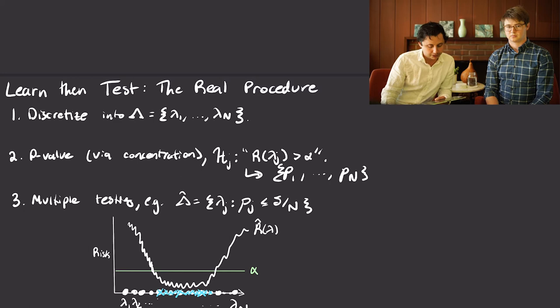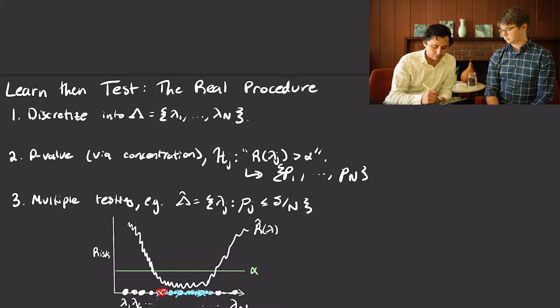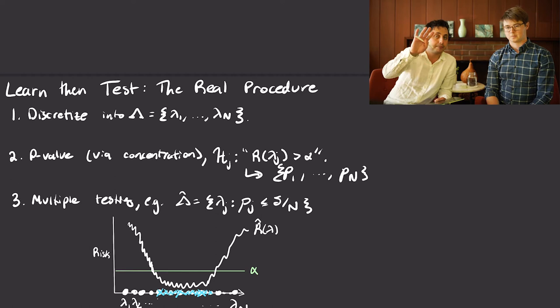What that looks like in the picture: you have your curve with statistical fluctuations, and we've indexed our lambdas in a discrete way. We're just going to reject as many of them as we can based on the p-values in the multiple testing procedure we select.